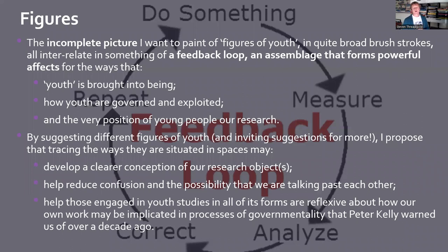In the paper, I want to think about this feedback loop, this assemblage — the actual effects of these different common combinations, these different forms of symbolic violence, these different attitudes — which are key to the way youth is brought into being as a concept, how youth are governed and exploited, and the position of young people in research. These things also affect the way young people in the real world think about themselves, because there are all these different stereotypes and figures that they compare themselves to in the socialisation process.